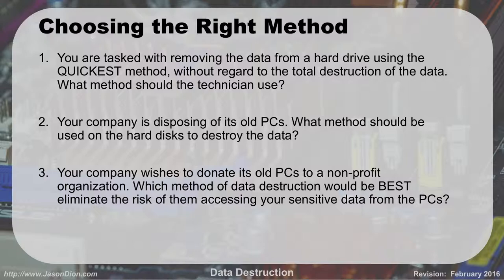If you're tasked with removing data from a hard drive using the quickest method without regard to the total destruction of the hard drive, what method would you use? The quickest way to destroy a hard drive is to smash it with a hammer or drill some holes through it — those kinds of things work well. If you're disposing of old PCs, you could overwrite the drive if you want to donate them, or smash them with a hammer if you're throwing them away. Smashing and destroying is the most effective way if you're not reusing it.